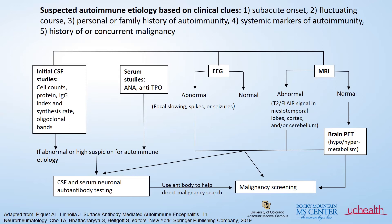In the setting of paraneoplastic neurologic disease, one may have a history of cancer. Working through this diagram, we often start with spinal fluid studies looking for any evidence of inflammation. We start with some blood tests looking for any nonspecific markers of inflammation. EEG can sometimes be helpful — this is a test to look for any underlying seizures.